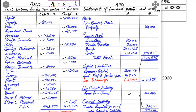This confirms the concept of the accounting equation: assets equal capital plus liabilities. Assets are the resources of the business, and these resources come from two sources — either the owner Mr. ARD has invested his own money, or the business has taken things on loan. The asset side always equals capital plus liabilities. This is basically a balance sheet, or statement of financial position.